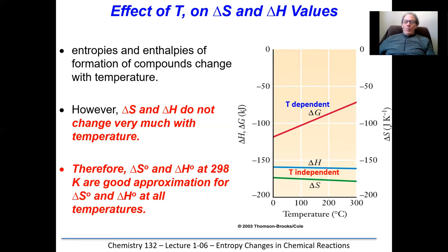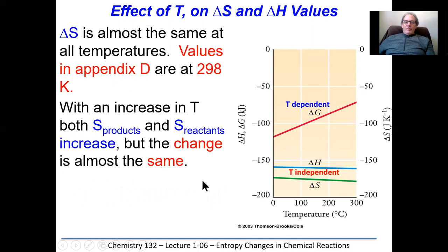With an increase in temperature, both entropy of products and entropy of reactants increase, but the change is almost the same. For example, if reactants have 100 J of entropy and products have 150 J — the difference is 50. If we increase temperature so reactants go to 110 and products go to 160, the entropies have changed but the change in entropy is still the same.